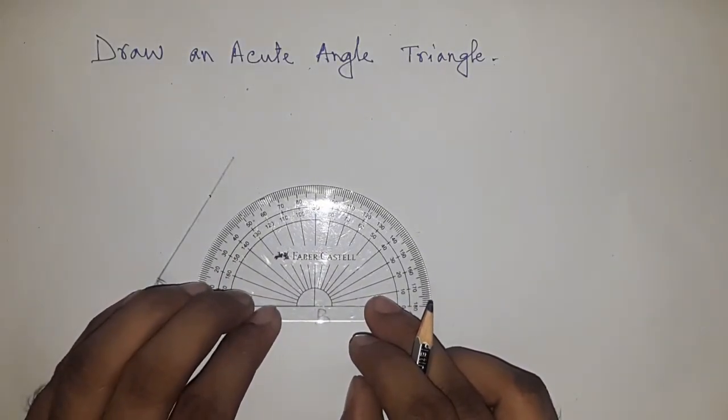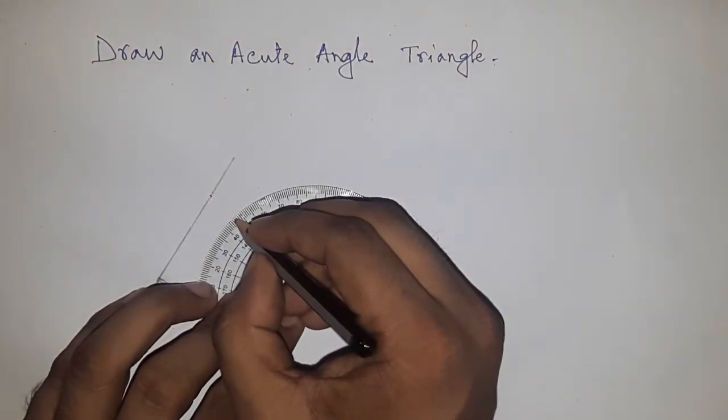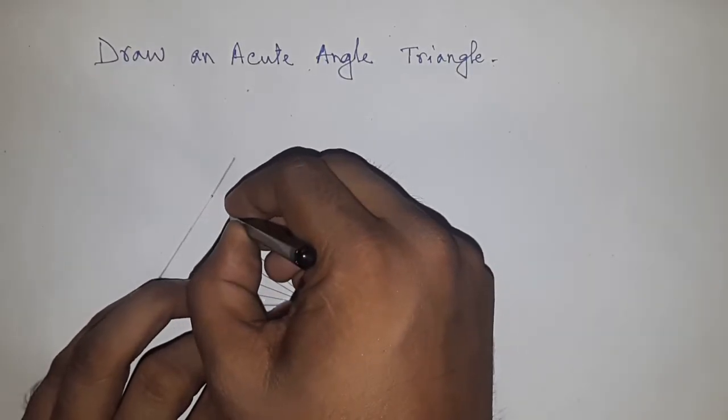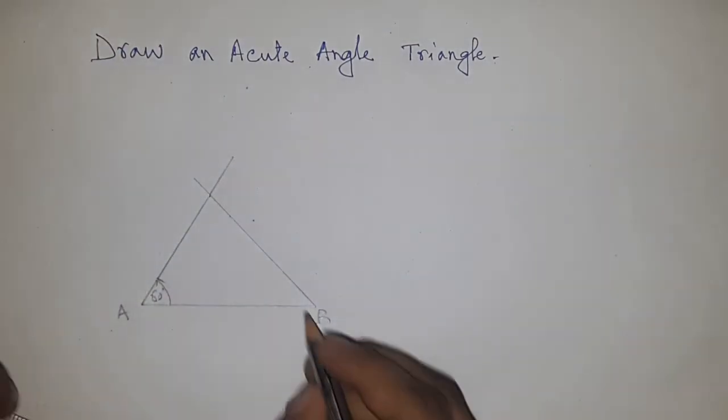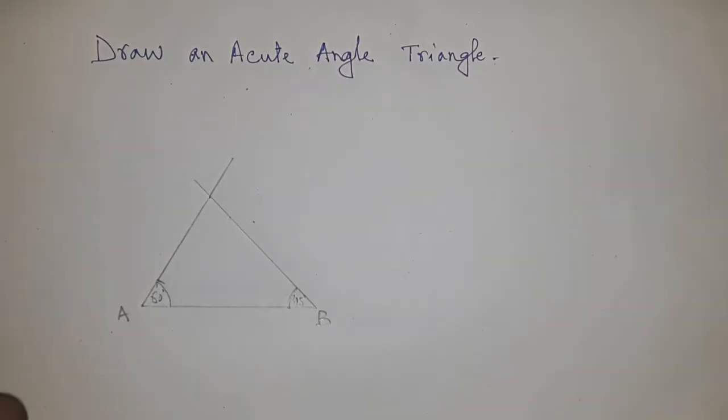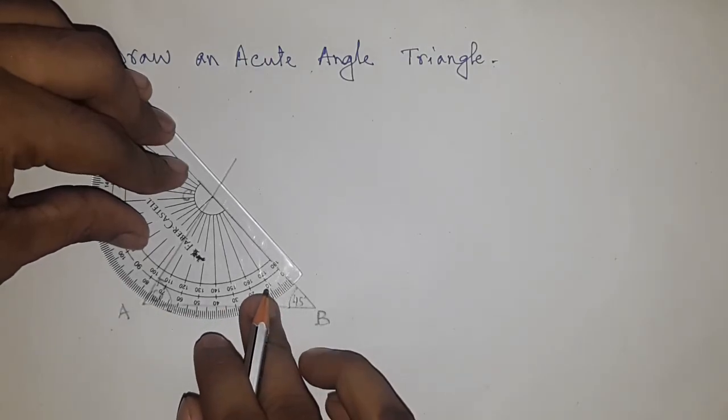Similarly, draw an angle here of 45 degrees. This is 45 degrees. Next, join this line. So angle B is 45 degrees. Next, check the angle of C. Obviously, this is 75 degrees.